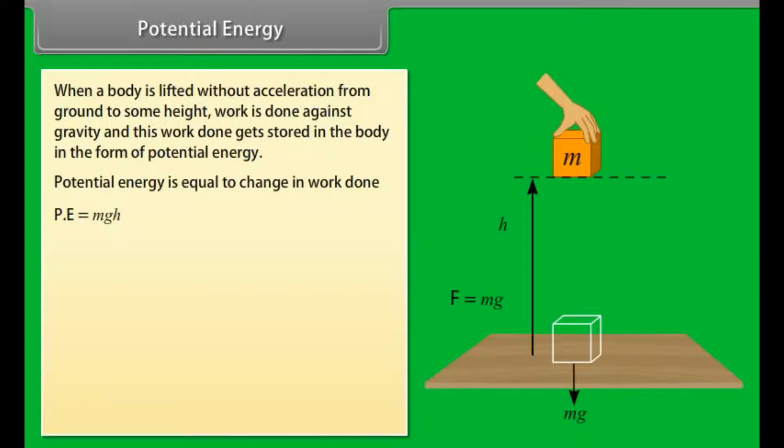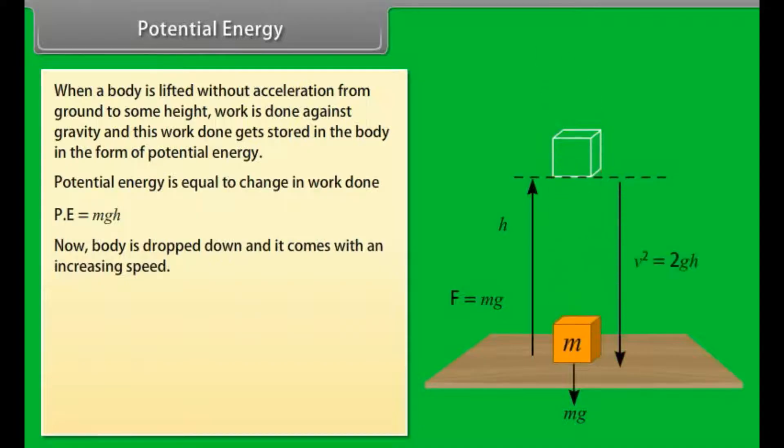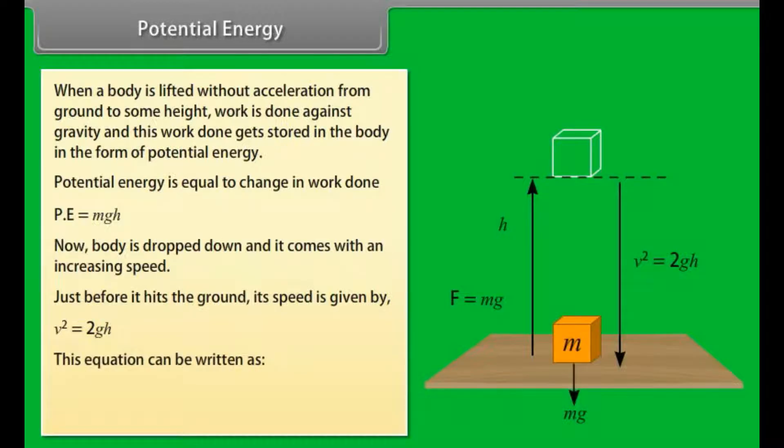Potential energy = change in work done. So potential energy = mgh. Now body is dropped down and it comes with an increasing speed. Just before it hits the ground, its speed is given by v² = 2gh. This equation can be written as ½mv² = mgh.